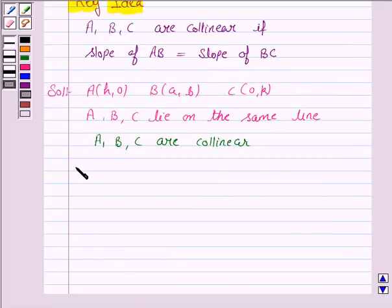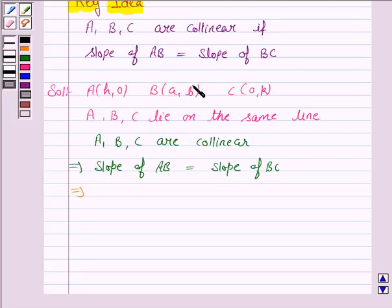This implies slope of AB equals slope of BC. Now, slope of AB is given by b minus 0, that is y2 minus y1 upon x2 minus x1, which is a minus h.